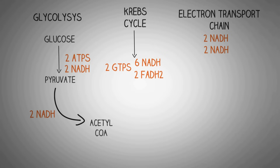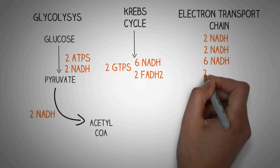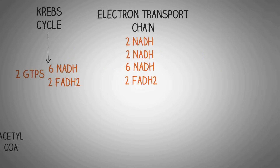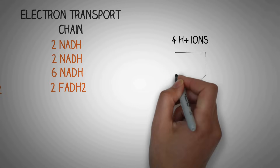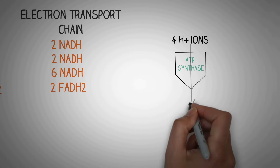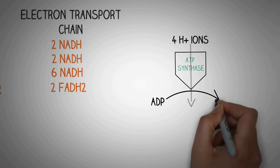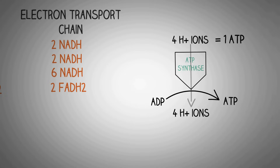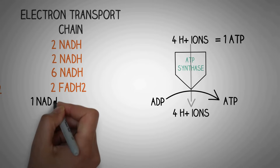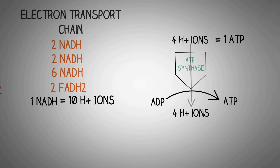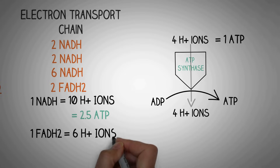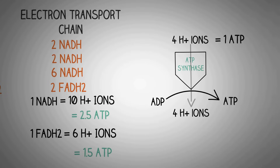All these reducing equivalents are then metabolized in the electron transport chain. We metabolize the two NADH from glucose to pyruvate conversion, the two NADH from pyruvate to acetyl-CoA conversion, and the six NADH and two FADH2 from the Krebs cycle. In the electron transport chain, for every four hydrogen ions that flow through ATP synthase, one molecule of ATP is generated. One molecule of NADH causes the movement of 10 hydrogen ions from the matrix to the intermembrane space, and when these flow back through ATP synthase, they give rise to 2.5 ATPs. Similarly, one FADH2 causes movement of six hydrogen ions, giving rise to 1.5 ATPs.